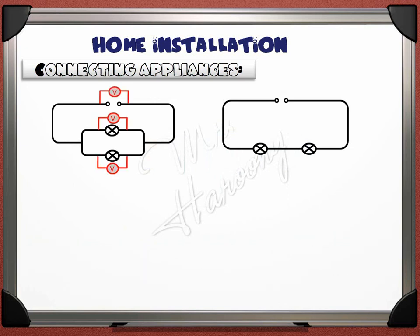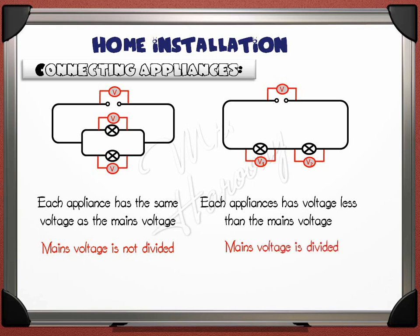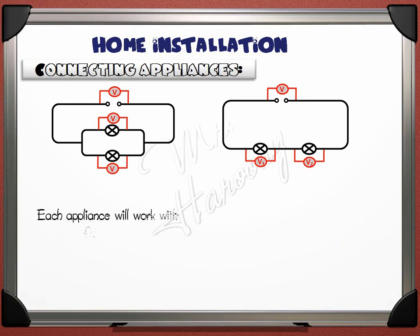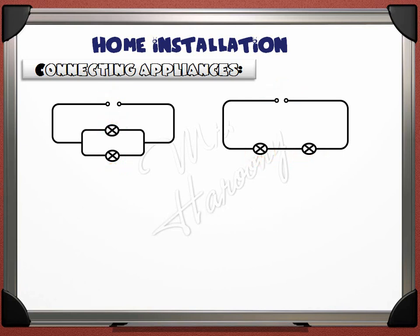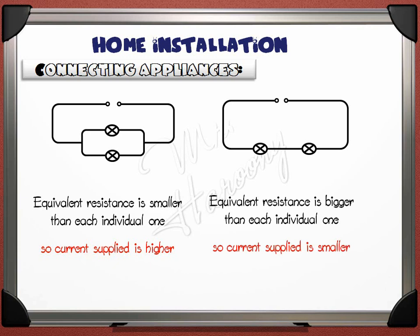First, comparing voltage: if the bulbs are in parallel, each appliance has the same voltage as the mains voltage — mains voltage is not divided. But for two bulbs in series, each appliance has a voltage less than the mains voltage because mains voltage is divided between them. Each appliance will work with full power in parallel, but in series each appliance will work with less power. Regarding resistance: in a parallel connection, equivalent resistance is smaller than each individual one, so current supplied will be higher. In a series connection, equivalent resistance is bigger than each one, so current supplied is smaller.